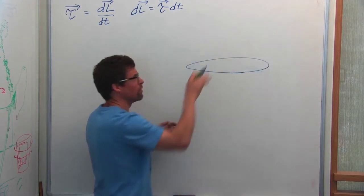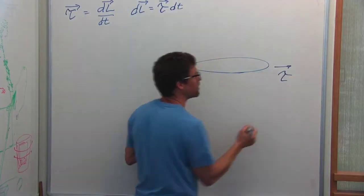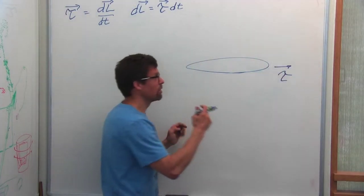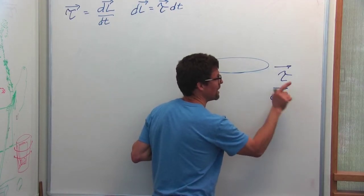and I push upward on this rim, it applies a torque in this direction, which will result in giving the frisbee an angular impulse, delta L, in this direction.